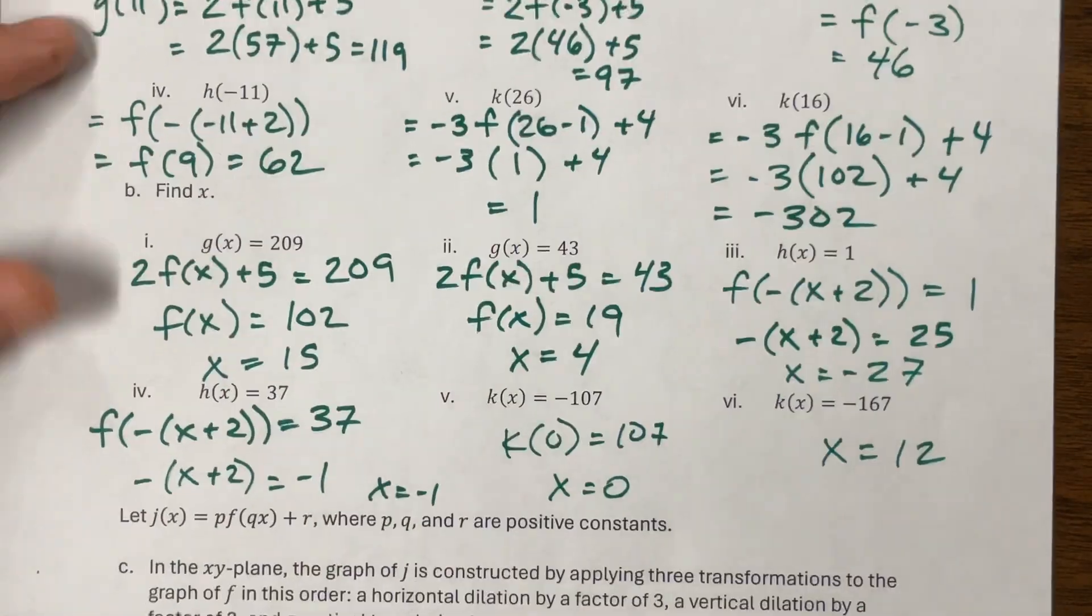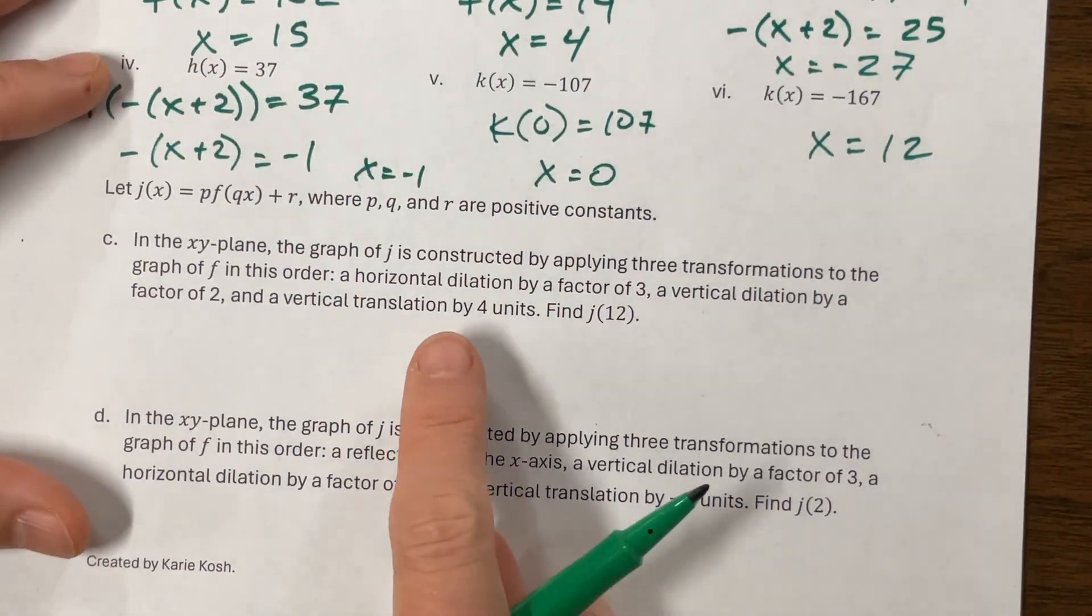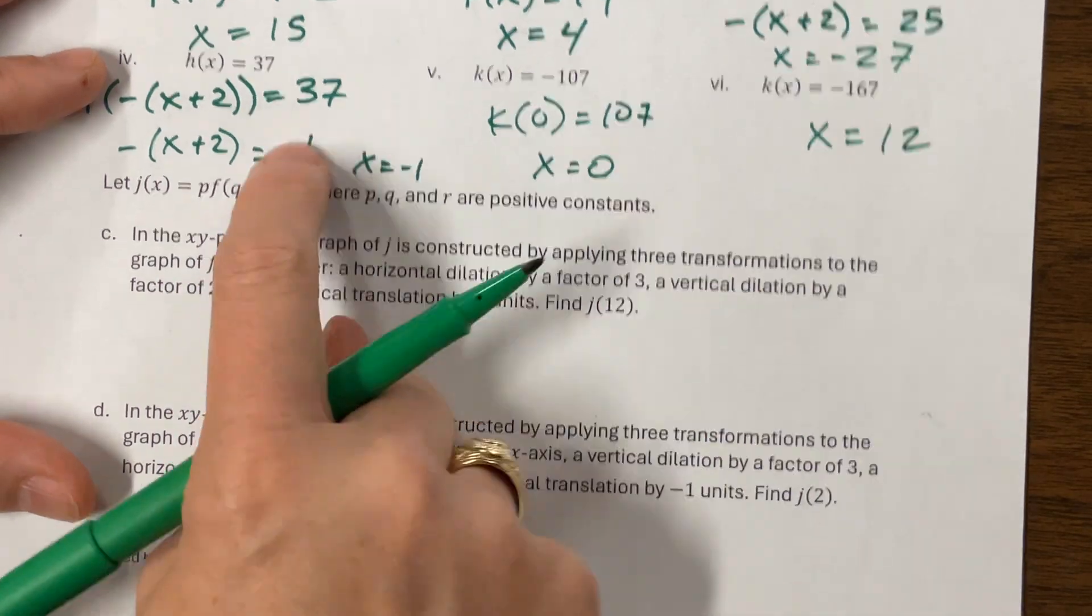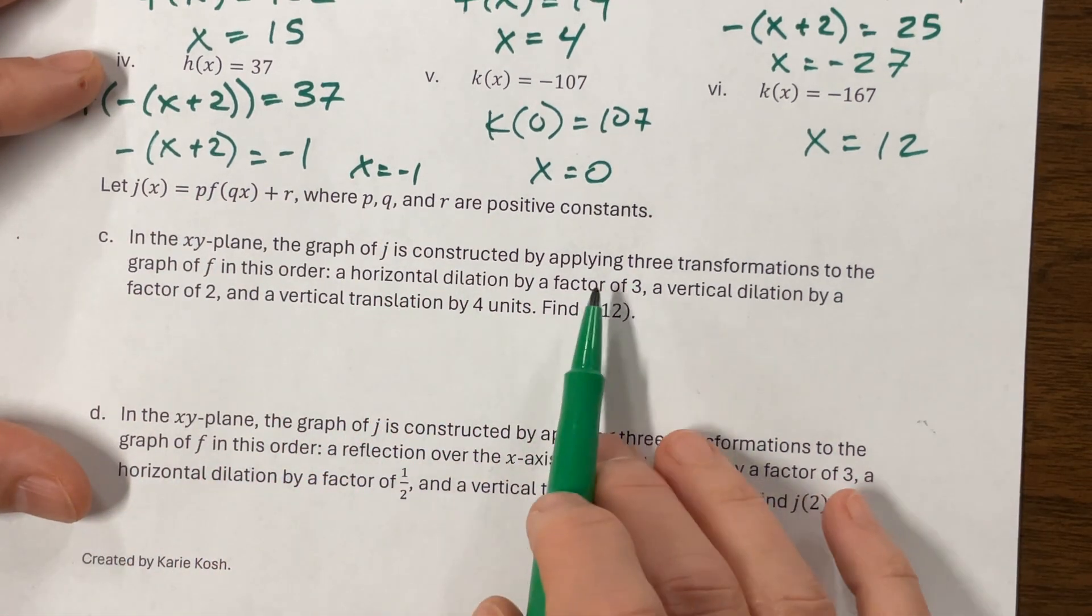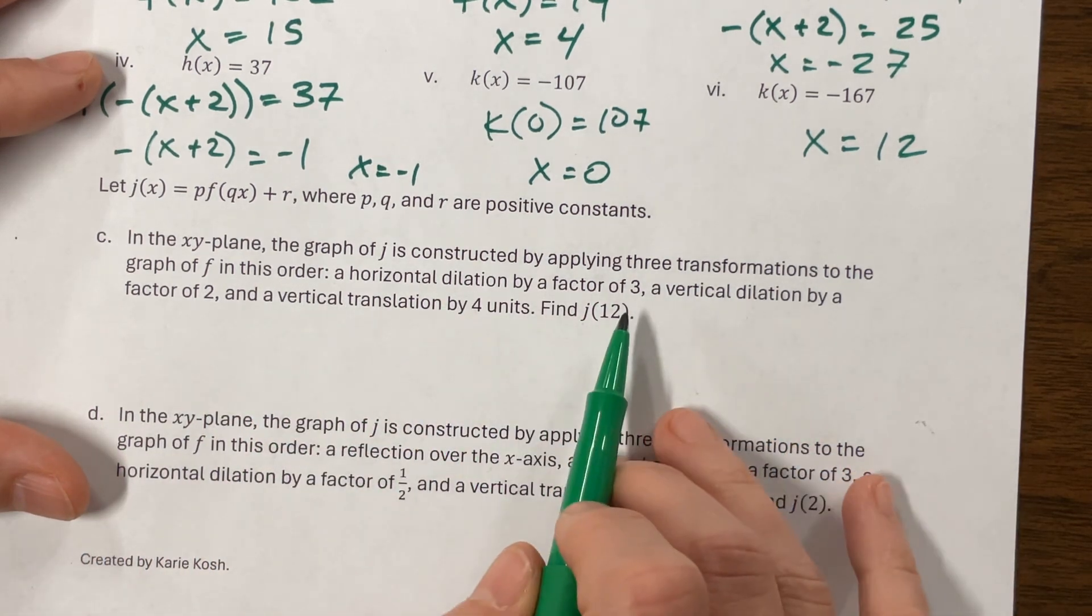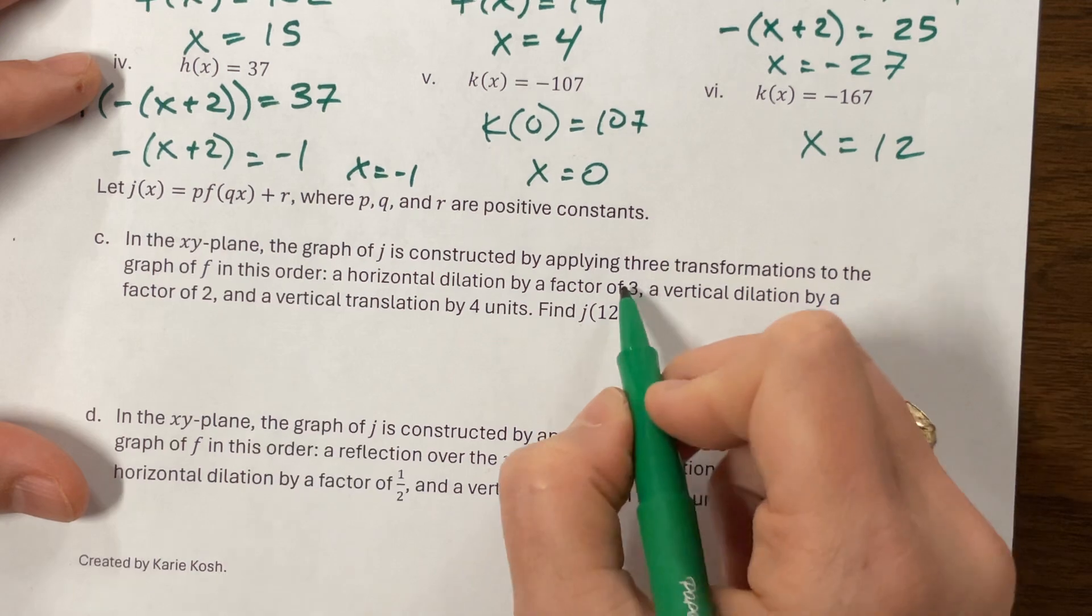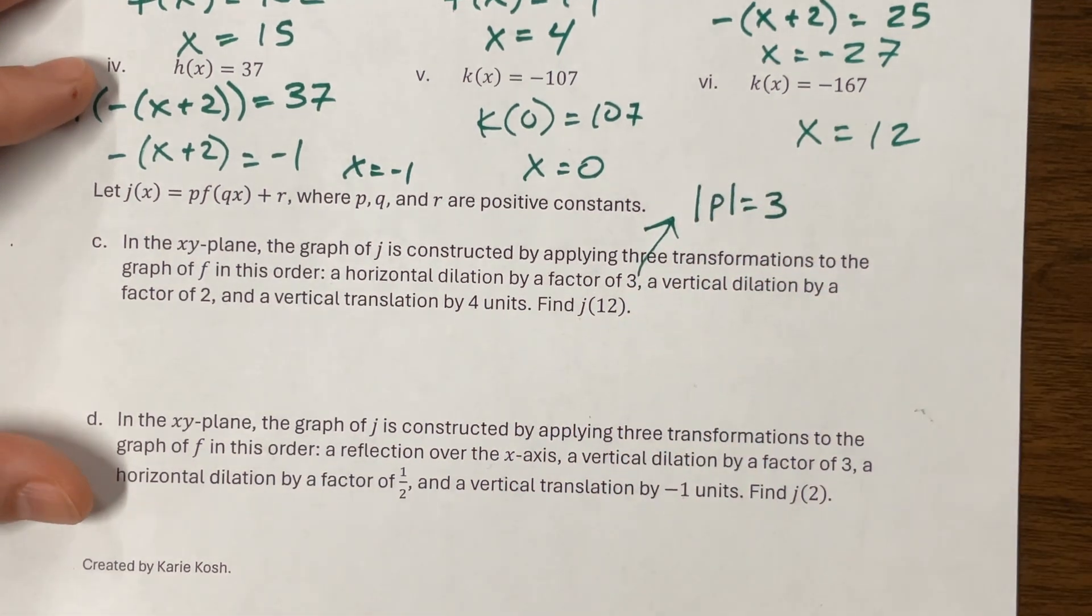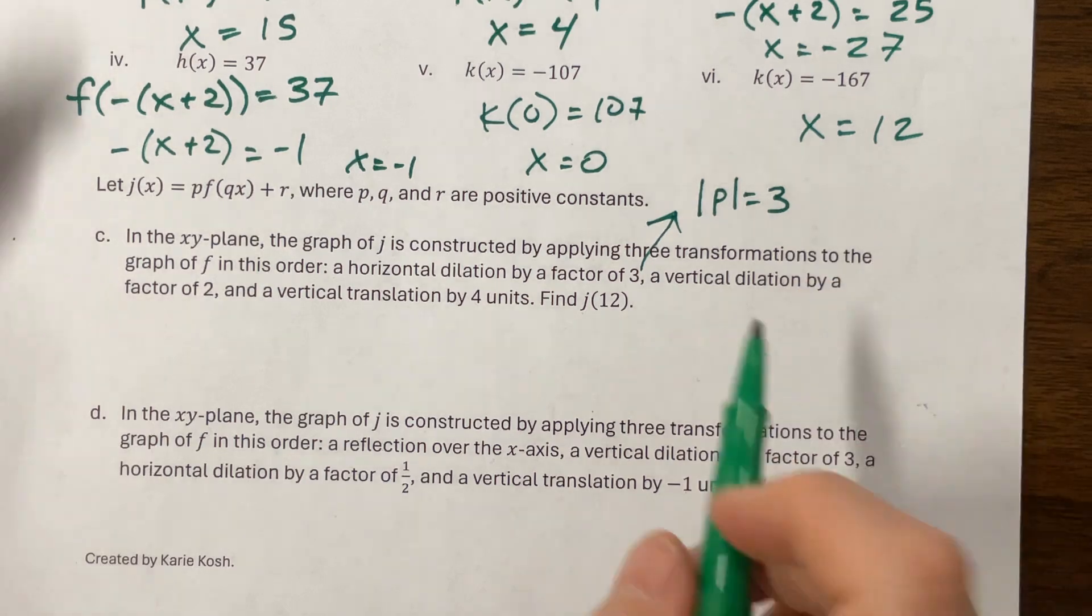And then I also saw that they like these problems where they give you, I saw something like this on AP Classroom. And they tell you, they've given you the format, and they're asking you to interpret the words and figure out what that's going to give you in the equation. So in the plane, the graph of J is constructed by applying three transformations to the graph of F in this order, a horizontal dilation by a factor of three. Horizontal dilation by a factor of three means that our P value right here, this is the absolute value of P will equal three. So they didn't tell us if there's a reflection or not, and it could be plus or minus, three. So let's just hold onto that for a second.